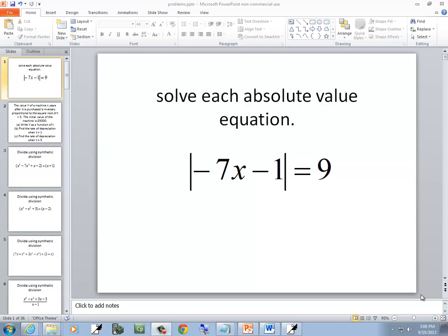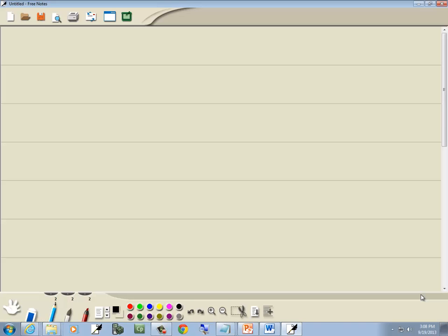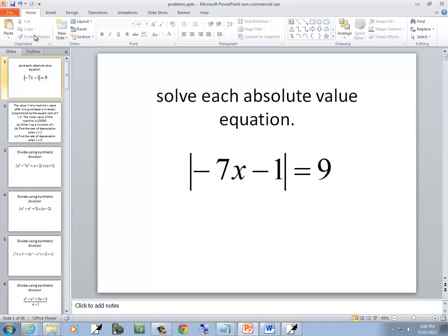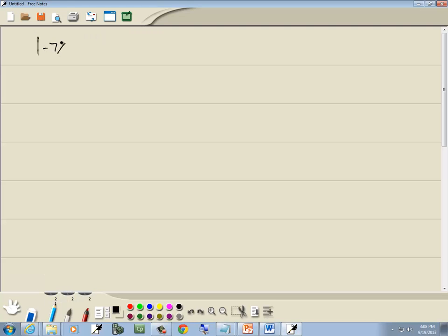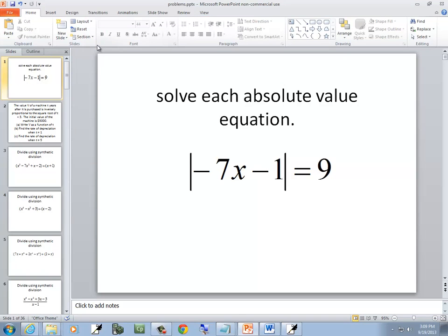In this problem, we want to solve each absolute value equation. So I've got the absolute value of negative 7x minus 1 is equal to 9.